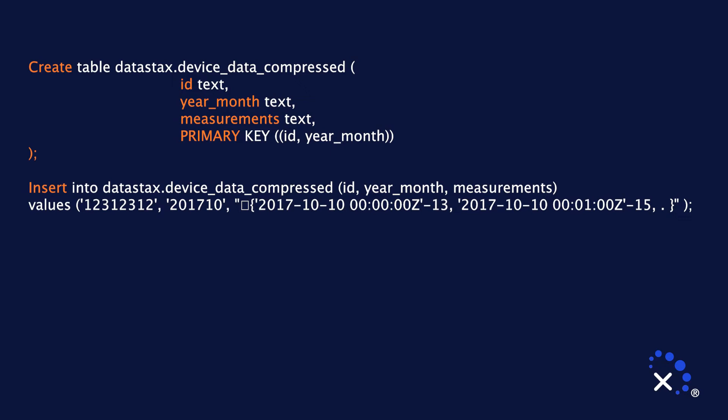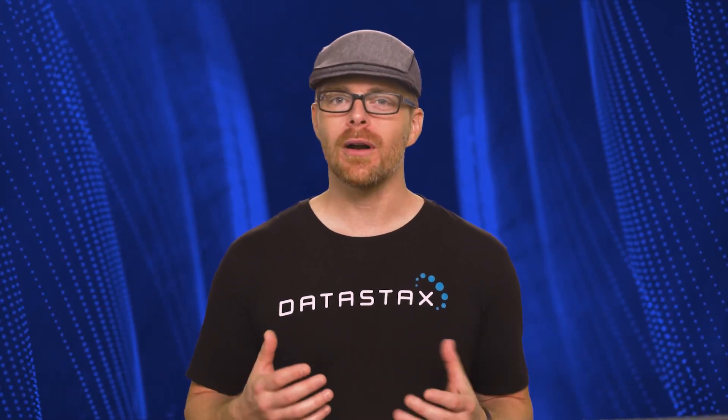Here's an example of a table using this technique. We have our ID column and year-month, but the key difference is the measurements column that stores data from bytes, a JSON object, or Java serializable in the measurements field. We also have concrete insert statements showing how it might look when inserting data into this table. Retrieving the daily data to store it in a compressed fashion also gives us a chance to sample values, compute statistics, or aggregate data in a way that may be useful at a higher level.